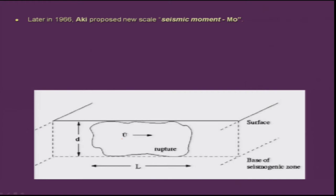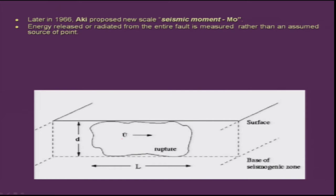It was necessary that the entire energy radiated by the entire fault be measured rather than measuring just a point source. The seismic moment is defined as Mo = Mu × S × slip, where slip is the amount of slip during an earthquake.